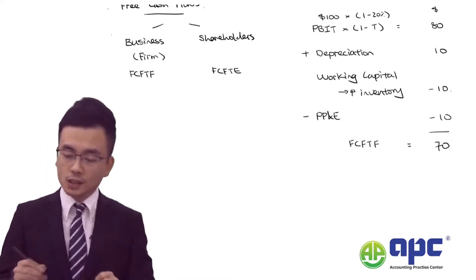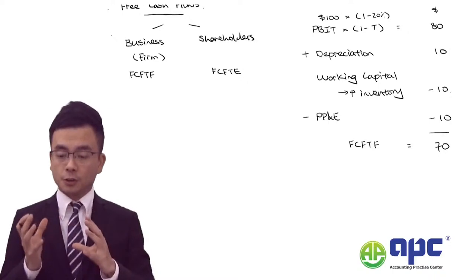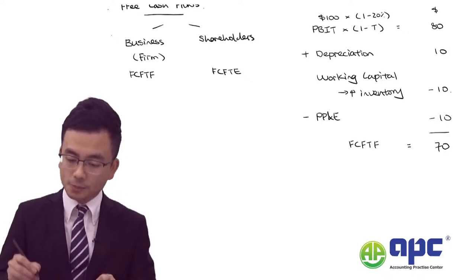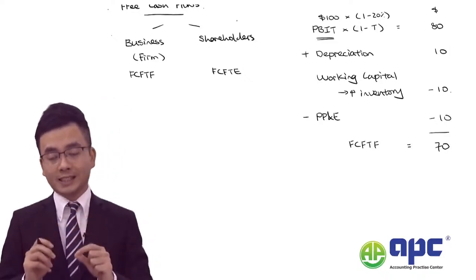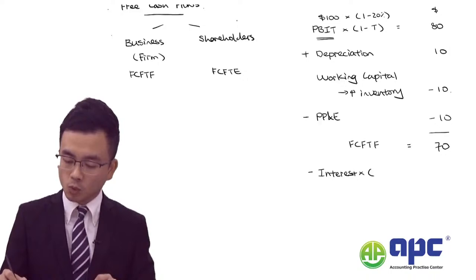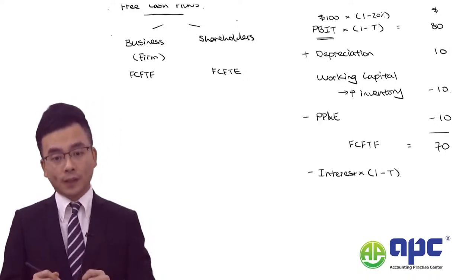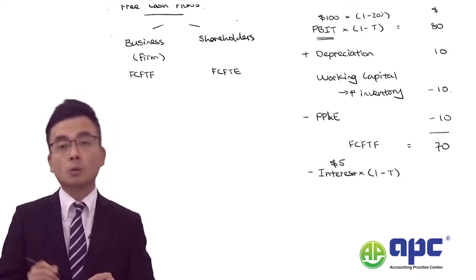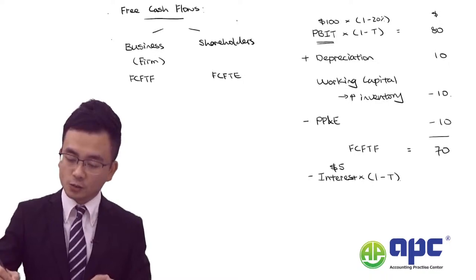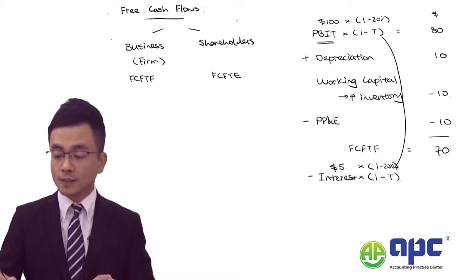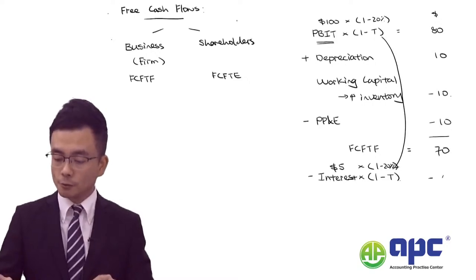To calculate the free cash flows to equity (FCFE), we take the free cash flows to firm and deduct interest — since we started from PBIT before deducting interest. At the same time, we multiply by one minus the tax rate to avoid double counting. Let's say interest expense is $5 and the tax rate is 20%, so we minus $4.